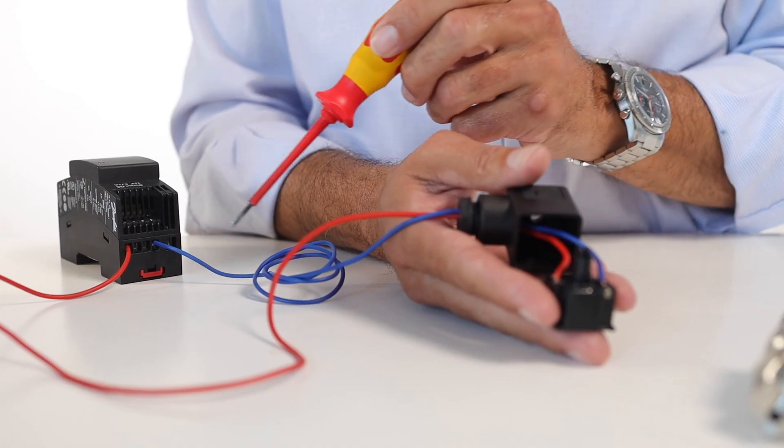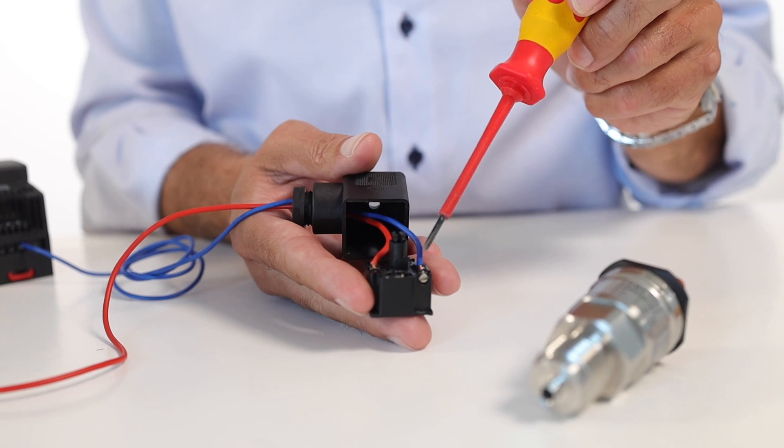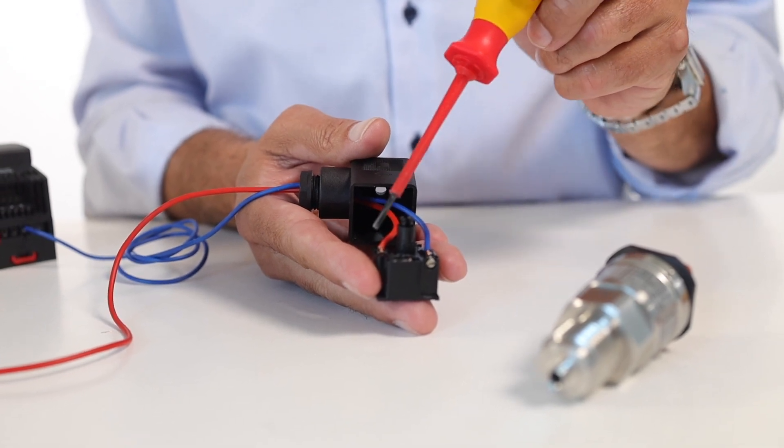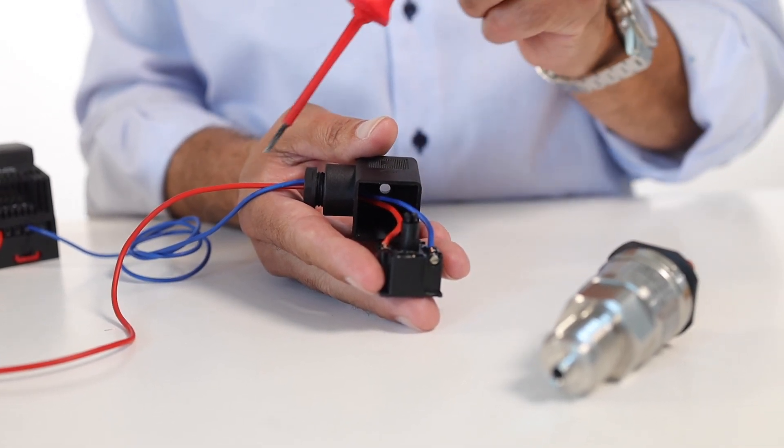Connect the positive supply from the power supply to pin 1 on the pressure transmitter. Connect pin 2 on the pressure transmitter to the milliamp display with a core.